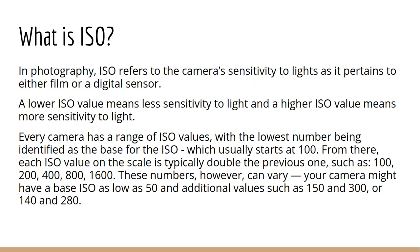Every camera has a range of ISO values. The lowest number is often 100, and each time it goes up it is typically doubled. However, this does vary by camera — some have a base as low as 50, and some have values like 150 or 140 as their lowest base value, depending on what camera you have.